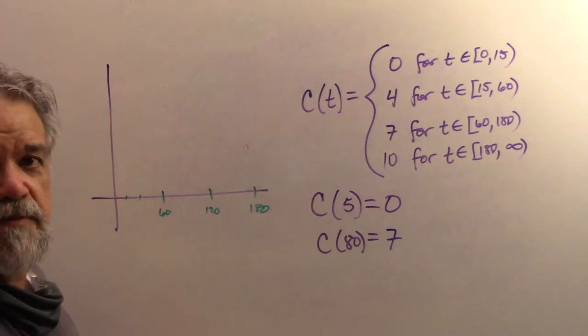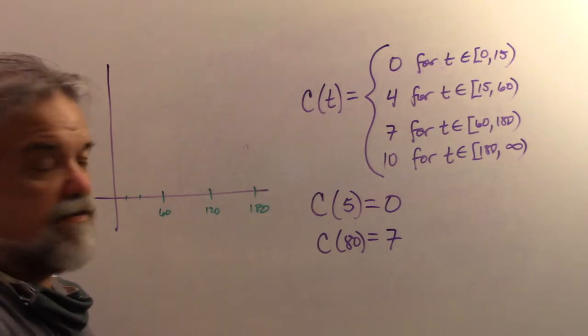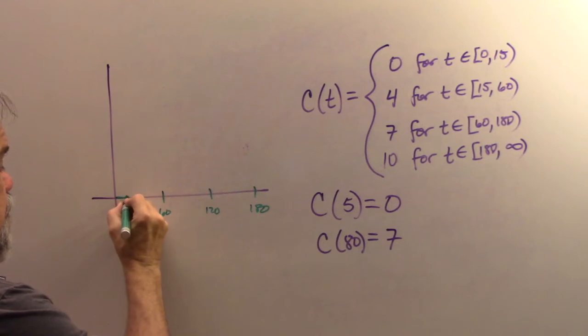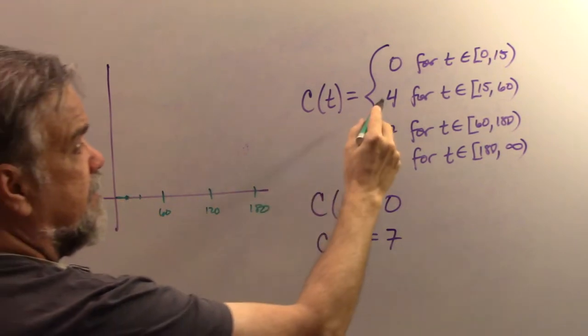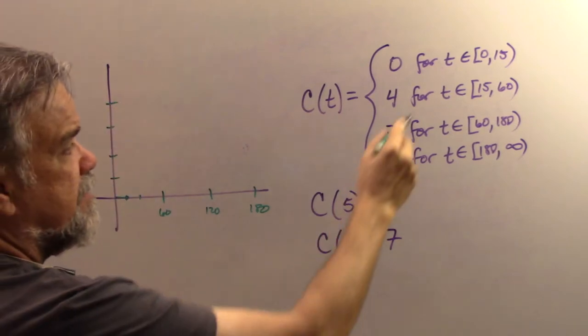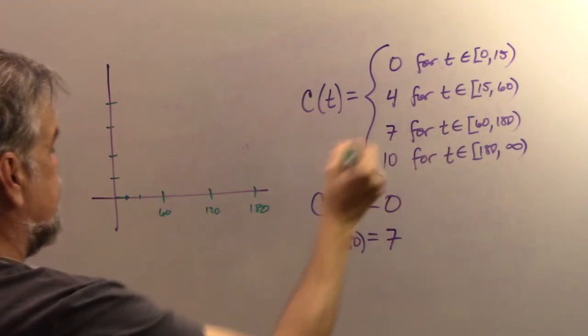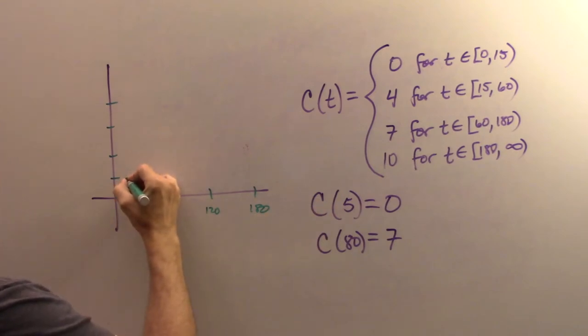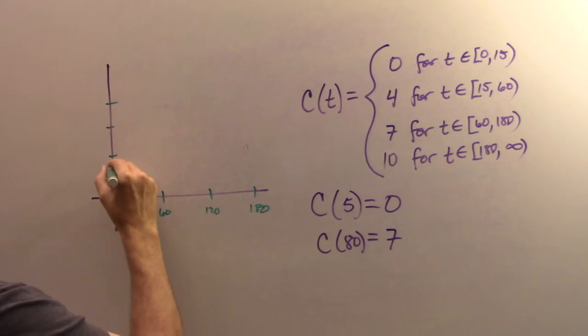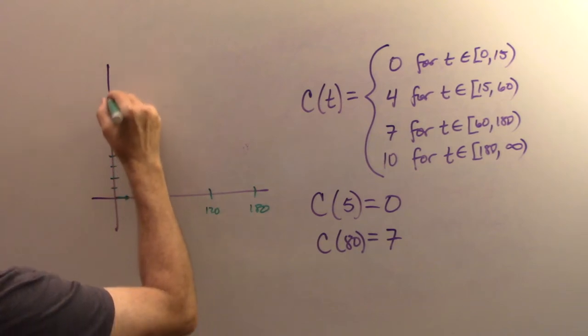So for the first 15 minutes, this is going to be zero. So I put a zero up until here and I put a filled in dot there. And then it's four here. One, two, three, four. There we go. And then it's going to be four when T is between 15 and 60. So I'm going to go to, oops, hold it. I need a lot more of that. One, two, three, four, five, six, seven, eight, nine, 10. There we go.